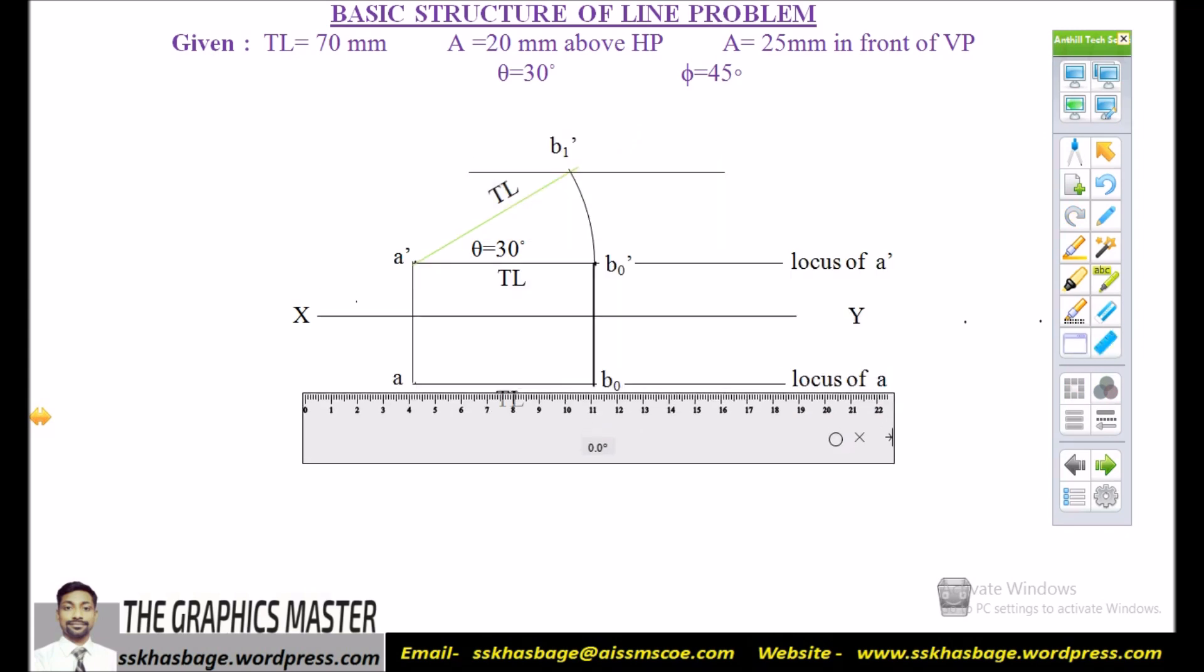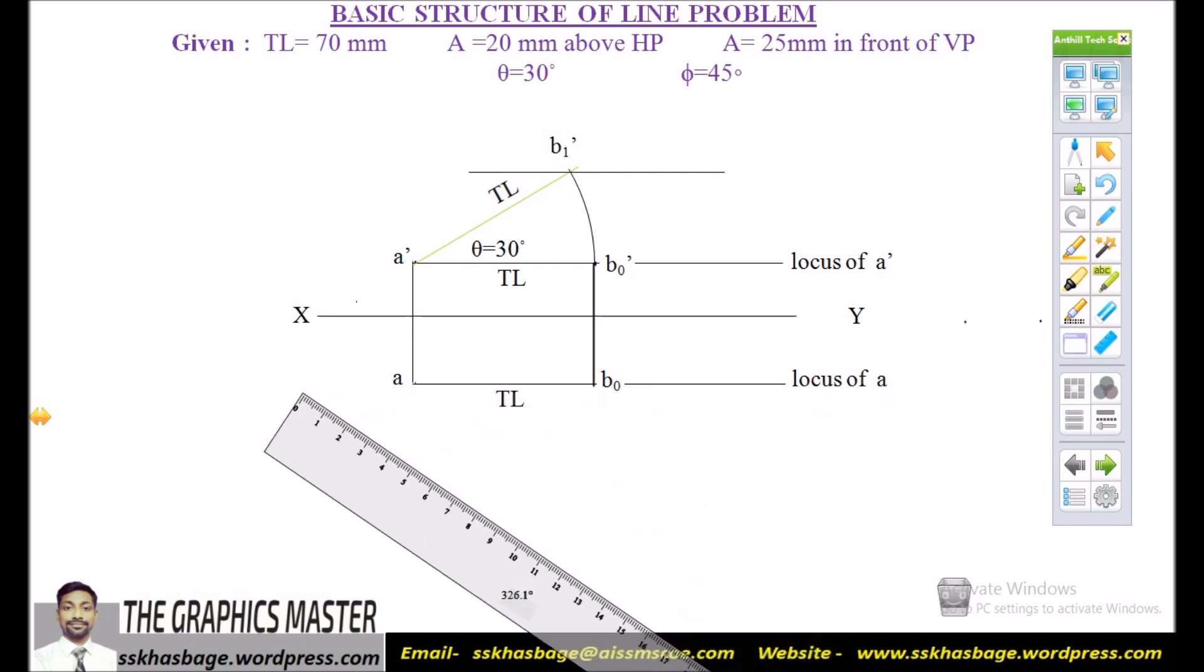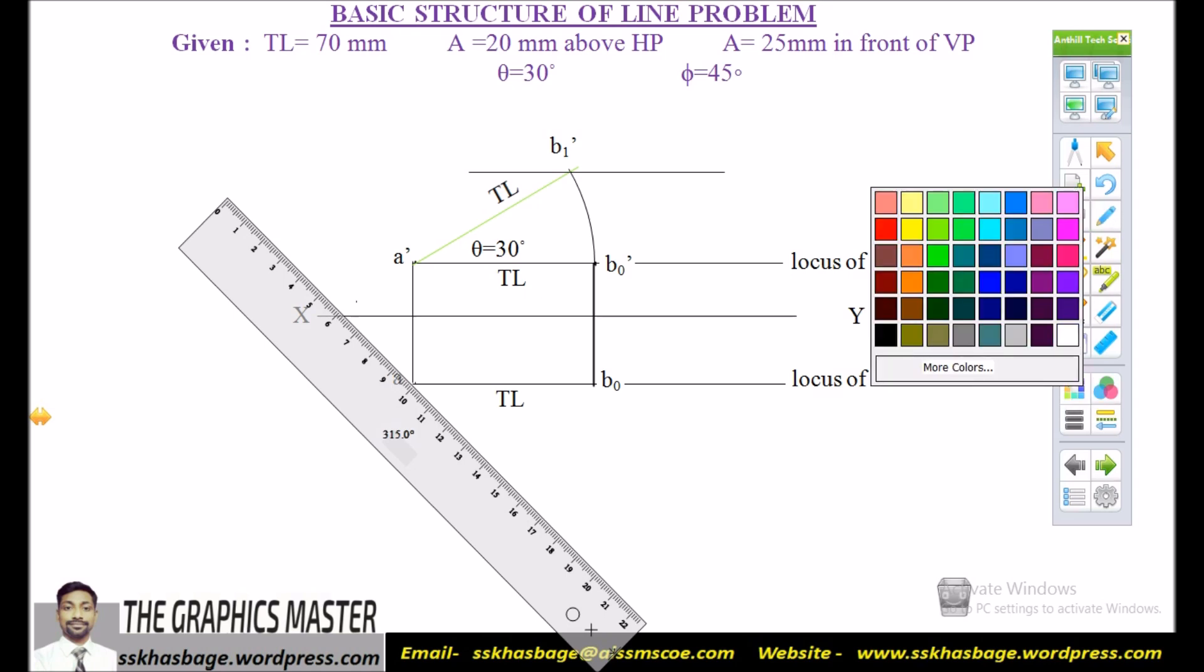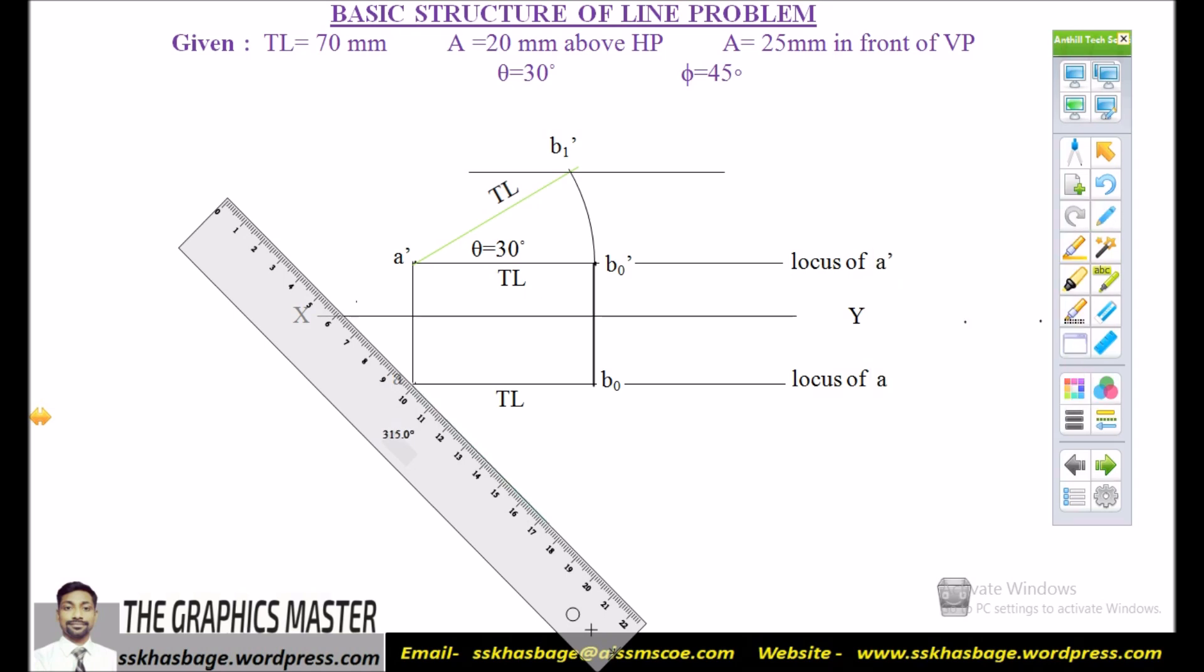Similarly, we can take the vertical plane that is phi equal to 45 degrees and then again we mark the true length over this true inclination in top view.